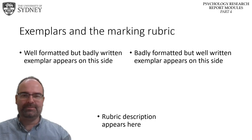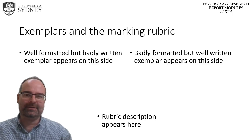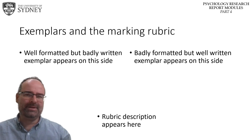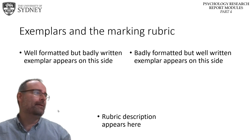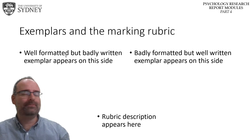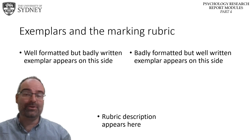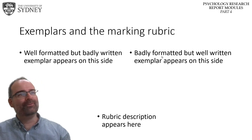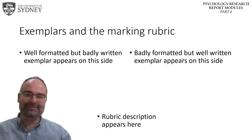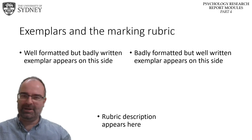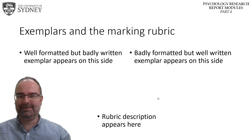In this video I'm going to be showing you examples of writing and also talking about the marking rubric we'll be using in first year. Each exemplar is a combination of good and bad. The one on the left is always going to be well formatted but badly written and contain a lot of content errors. The one on the right is always badly formatted but well written with pretty good content. The rubric description relevant to each section will appear in the middle.